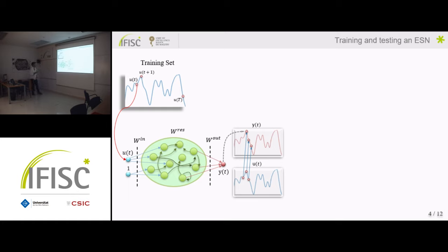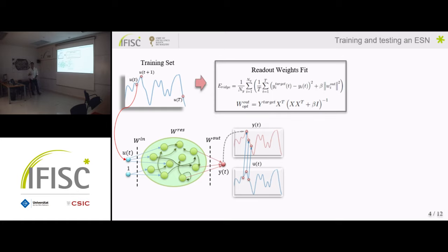And one of the reasons why we chose this type of network is because they are really easy to train. You don't have to care about the input weights here, they remain random. You don't have to care about the reservoir weights here, which are also random. But you just have to train the readout weights in this last layer. So to do that, we can define an error between our output and our targeted series and include a regularization term for stability reasons. And in the end this is sort of a least square error method to fit the output weights with a regularization term.